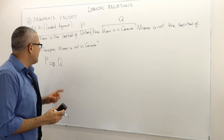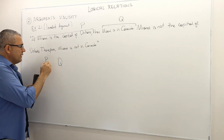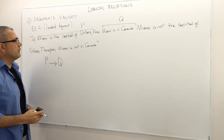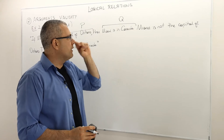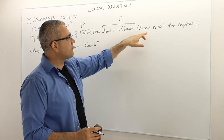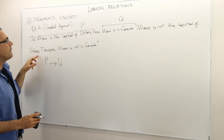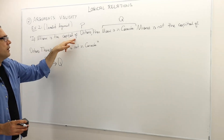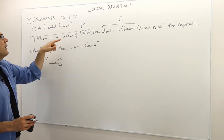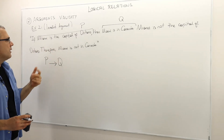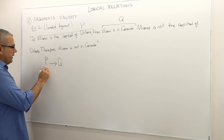By the way, sometimes we use this notation, sometimes this notation — they're equivalent, so don't get confused. The second part of the argument is 'Miami is not the capital of Ontario.' This is the negation of atomic sentence P — it's not the case that Miami is the capital of Ontario. So the second premise is not P.